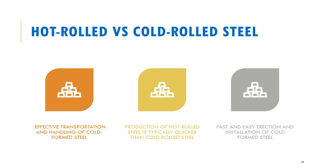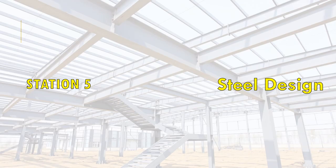There are advantages and disadvantages to using each type, and it predominantly depends on the application. If a structure needs to resist heavy loadings, the main load-bearing elements have to be hot rolled steel. Whereas interior framings, such as wall framing, can be constructed from cold formed steel.